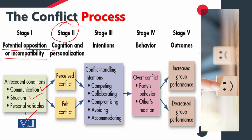When we look at stage 2 — cognition and personalization — we have to see whether it is perceived conflict or felt conflict. In the case of perceived conflict, you can know the root causes of conflict, recognize its antecedents, and know what circumstances triggered that conflict. But when you feel conflict, that is just a feeling of conflict — you don't know its logical reasoning.